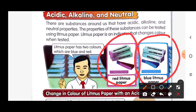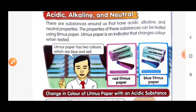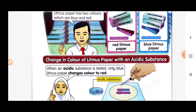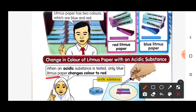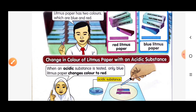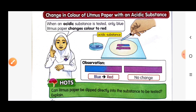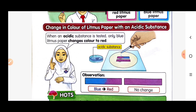Now we will discuss the change in color of litmus paper with an acidic substance. When an acidic substance is tested, only the blue litmus paper changes color to red.